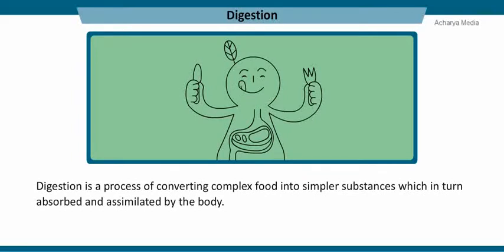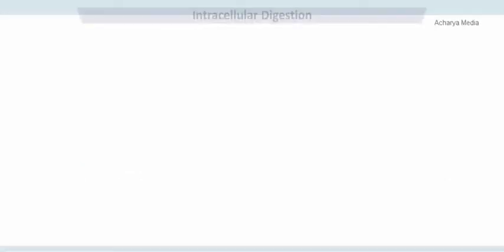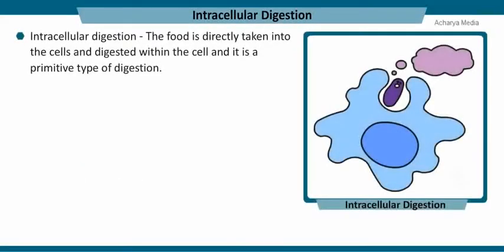Digestion is a process of mechanical and chemical breakdown of complex food into simpler components which are easily absorbed and assimilated by the body. Intracellular digestion is when food is directly taken into the cells and digested within the cell. It is a primitive type of digestion.